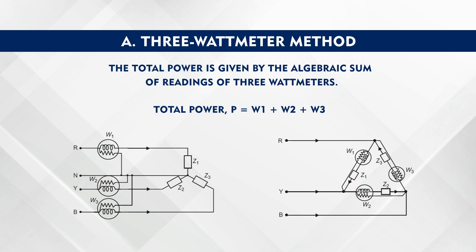So, the total power P is equal to W1 plus W2 plus W3, where W1, W2, and W3 are the readings of all three wattmeters.